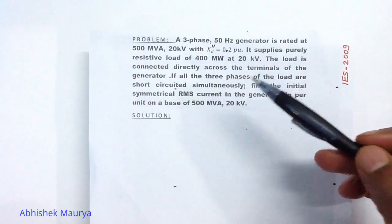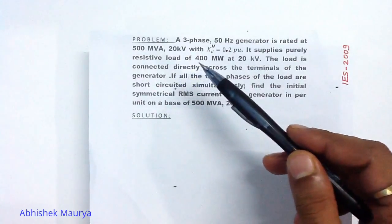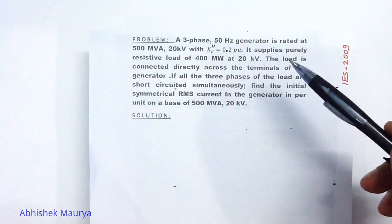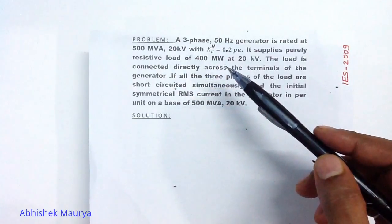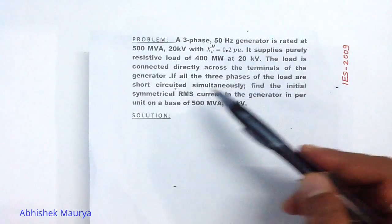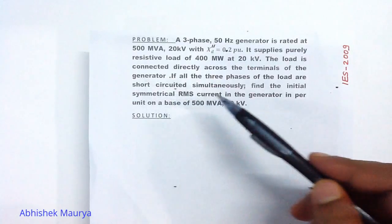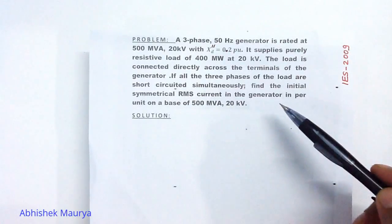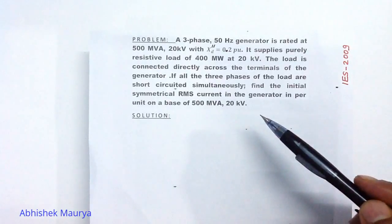A three-phase 50 Hz generator is rated at 500 MVA, 20 kV with sub-transient reactance of 0.2 per unit. The generator supplies a purely resistive load of 400 megawatt at 20 kV. The load is connected directly across the terminals of the generator. If all three phases of the load are short-circuited simultaneously, we have to calculate the initial symmetrical RMS current in the generator in per unit on a base of 500 MVA, 20 kV.